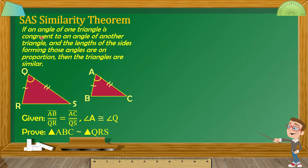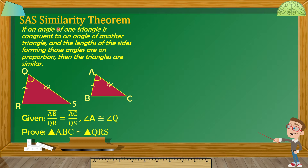That is the meaning of SAS Similarity Theorem: one congruent angle, and the sides forming those two angles are proportional. Then we can say that the two triangles are similar. Remember, for similar triangles, all corresponding angles are congruent and the corresponding sides are proportional. Using SAS Similarity Theorem as a shortcut, we can more quickly show that two triangles are similar — we only need one included angle and two proportional sides. Since this is a theorem, we need to prove that this statement is true.